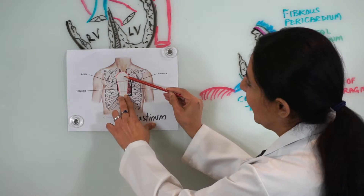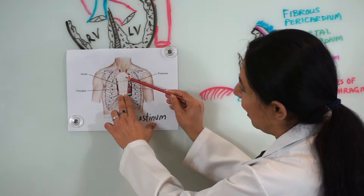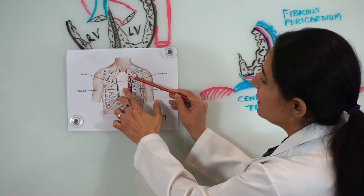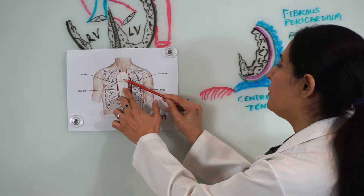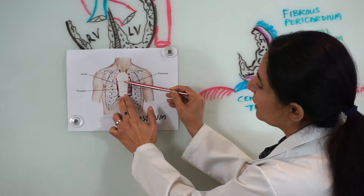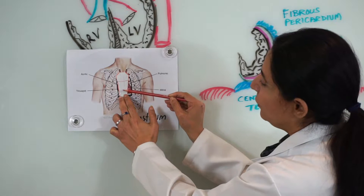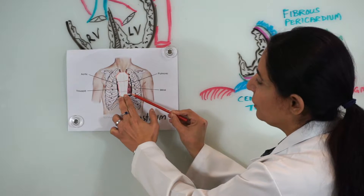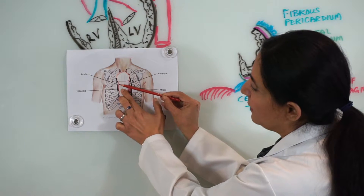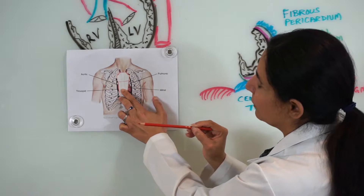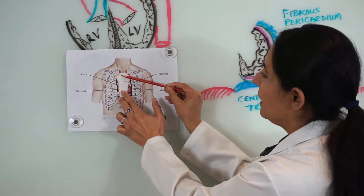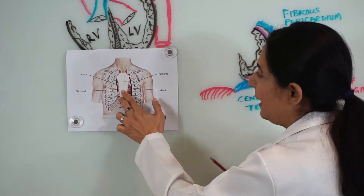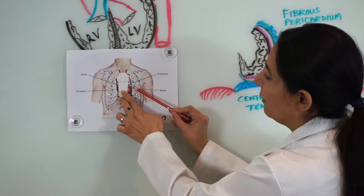Just behind the sternum, you can see the heart is hardly visible. The vessels emerging out of the heart, known as the great vessels of the body, are hidden behind the manubrium sterni, while the body of the sternum is guarding the rest of the heart from the front. The only visible portions are the left ventricle along with the apex of the heart on the left side, and a very little portion of the right border on the right. Most of the heart is covered by the sternum, and the sides are covered by the costal cartilages.